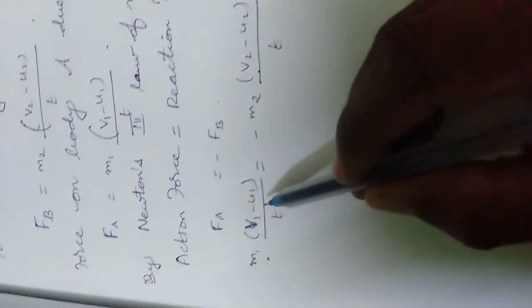M1(V1 - U1)/T is equal to minus M2(V2 - U2)/T. T is cancelled.